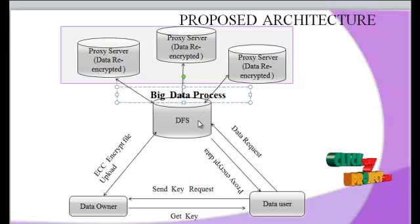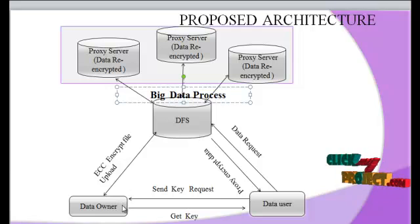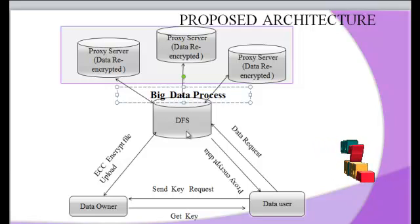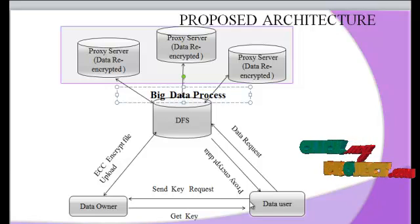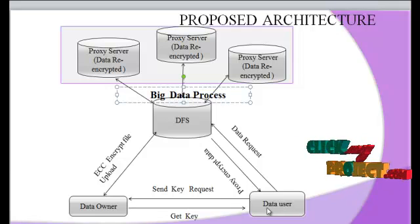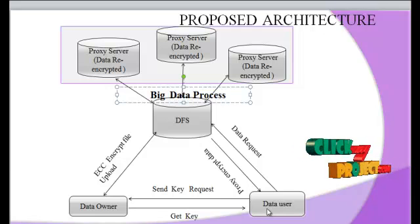The data user then provides the ECC file key. The files are decrypted from the DFS location, and the authenticated user receives the plain text file. In this way, cloud data operations are secured using this process.